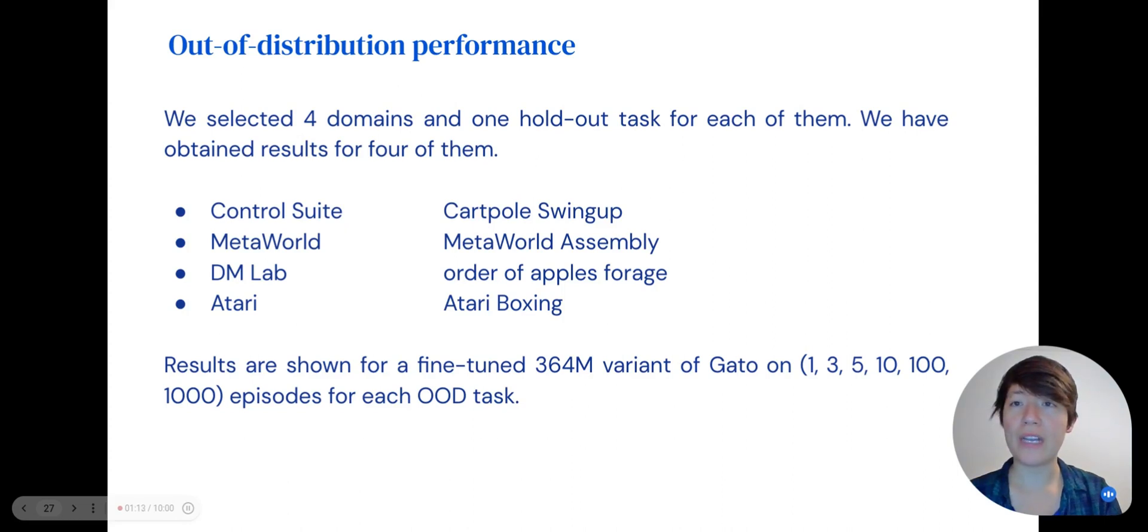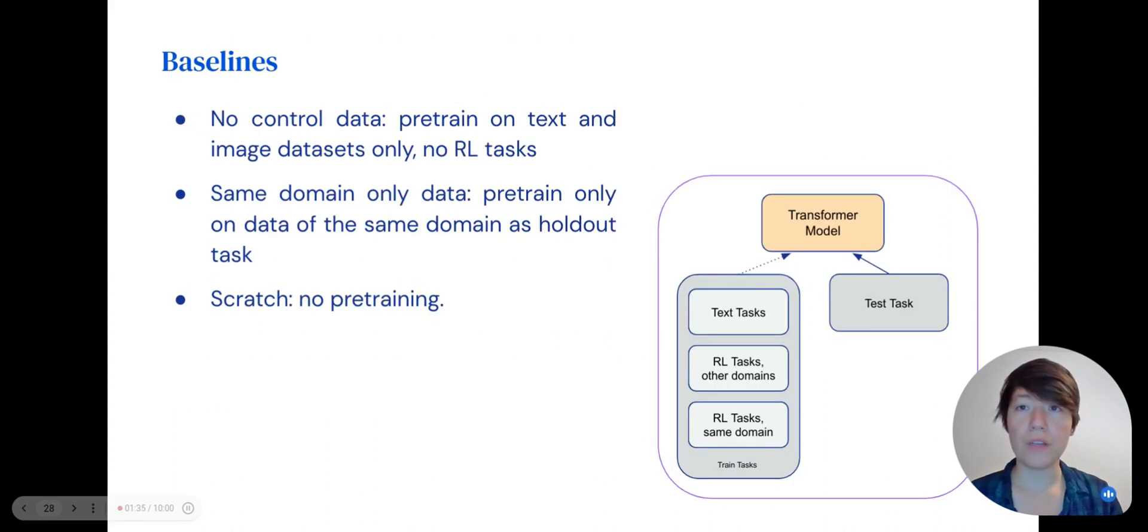To understand Gato's ability to generalize to unseen environments, we evaluated it on four holdout tasks, each from a different domain. For each task, we selected small subsets of a varying number of episodes and fine-tuned Gato on each subset in order to understand how well Gato can adapt to these new domains. 364 million parameter variant was used for the sake of saving compute. We compared fine-tuning the model trained on all inter-distribution data to several other baselines. The no-control data baseline is pre-trained on data from text and image datasets only, but no RL episodes. The same domain-only data baseline is pre-trained on data from the same domain as the holdout task, and the from-scratch baseline has no pre-training at all.